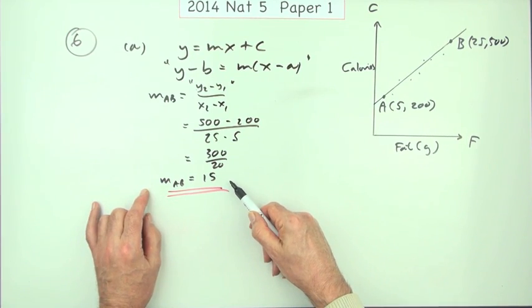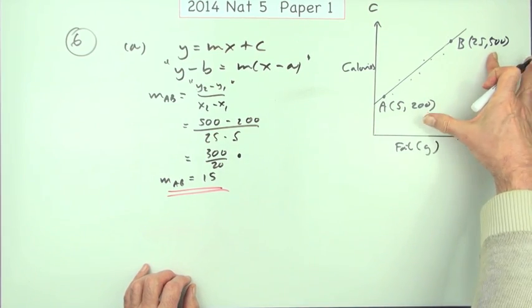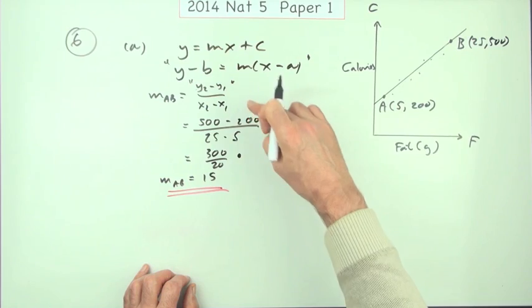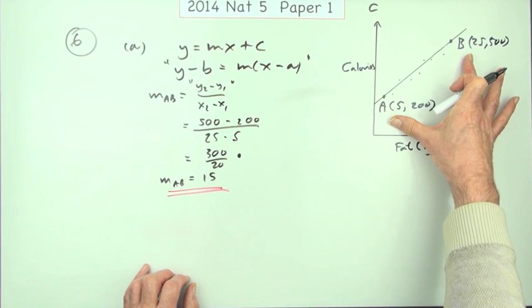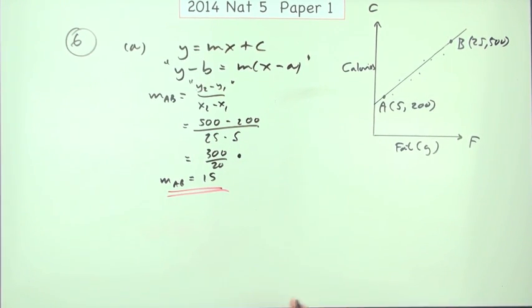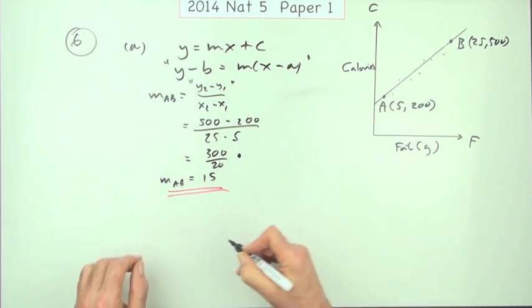Now, you'd have thought that would have been the first mark, but apparently the first mark just comes from getting 300 over 20, just for subtracting that, because you don't have to write any of this down. Distance up, it's gone up 300. Distance along, it's gone along 20. 300 over 20. That's the first mark.